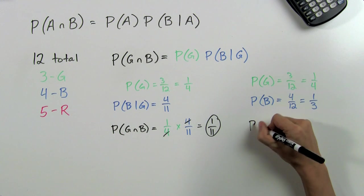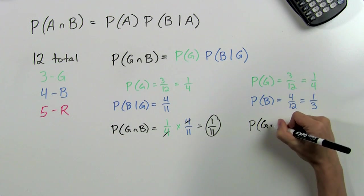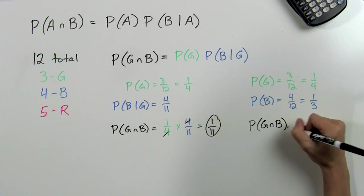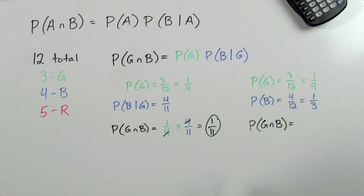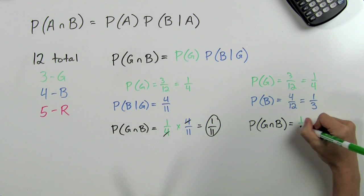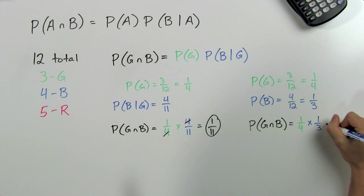Therefore, the probability of having pulled out a green and blue marble after replacing the green one would be equal to one-fourth times one-third, which is equal to one-twelfth.